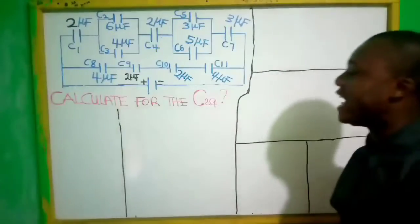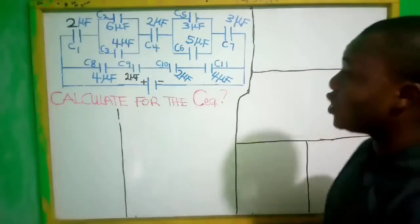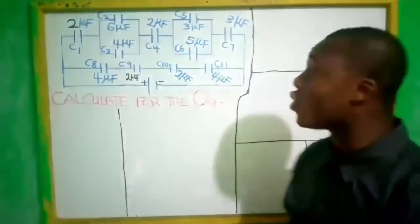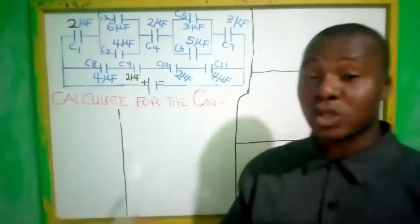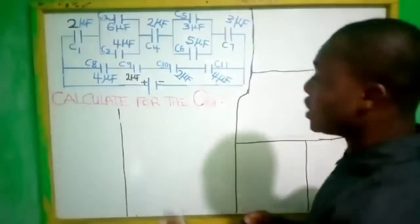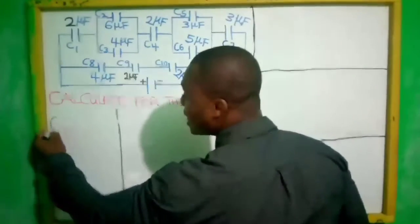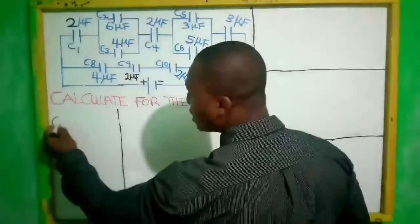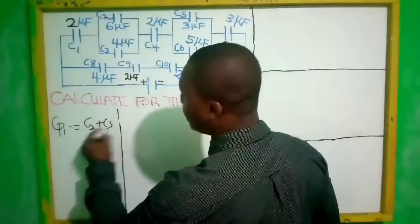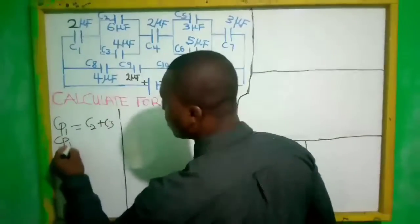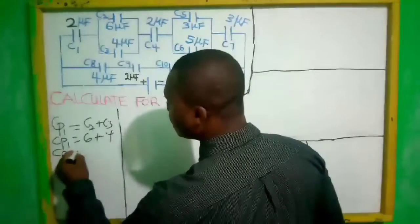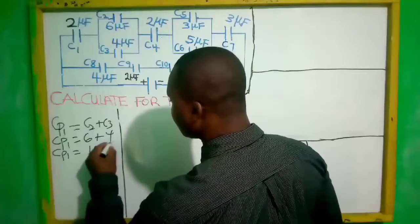We are asked to calculate the equivalent capacitance. When capacitors are connected in parallel, you simply add them — whether two, three, four, or five capacitors. So let's start: C_para1 equals C2 plus C3, which is six plus four, giving us C_para1 equals 10 microfarads.